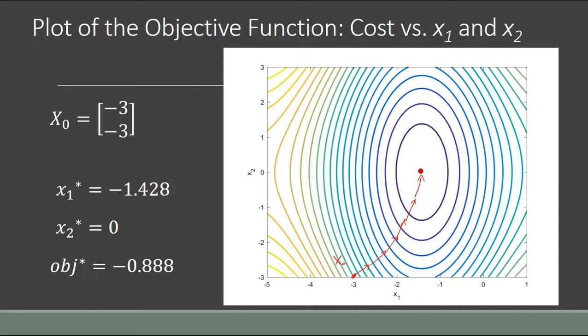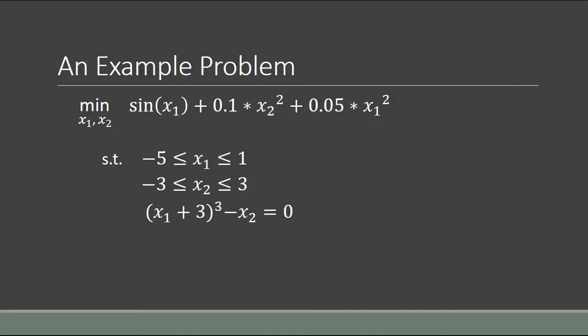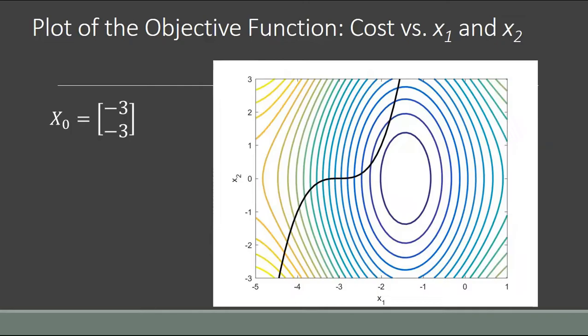Now let's see how it looks when we introduce a constraint. Here we have the same optimization problem but we've introduced a new constraint: x1 plus 3, that quantity cubed, minus x2 has to be equal to zero. This is going to restrict our problem — whereas previously we had two degrees of freedom, once we have our nonlinear equality constraint that essentially takes away one of our degrees of freedom, so we'll be free to move along that constraint line but can't have a feasible solution outside of it.